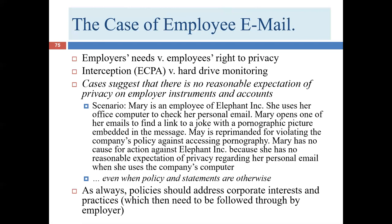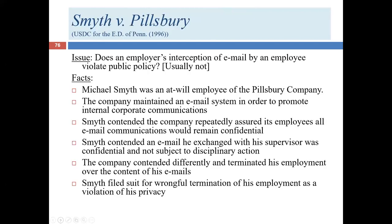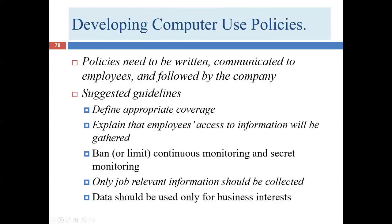The lack of reasonable expectation of privacy applies even if there are ambiguous statements from the employer. It's not unusual for employers to be unclear about what's private and what's not. When you're in HR or the legal department, you won't permit that — you'll ensure there's a consistent, reasonable policy in effect. But even in environments with ambiguity, there's a good chance the employee still lacks a reasonable expectation of privacy. Email sent at work is generally not going to be considered private under any definition.